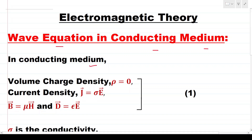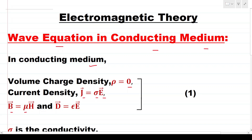In a conducting medium, the volume charge density is 0, and current density J is equal to conductivity σ times the electric field vector E. The magnetic flux density B is equal to μH, where μ is the permeability of the medium and H is the magnetic field. D, the displacement vector, is equal to ε times E, where ε is the permittivity of the conducting medium, as given in equation 1.